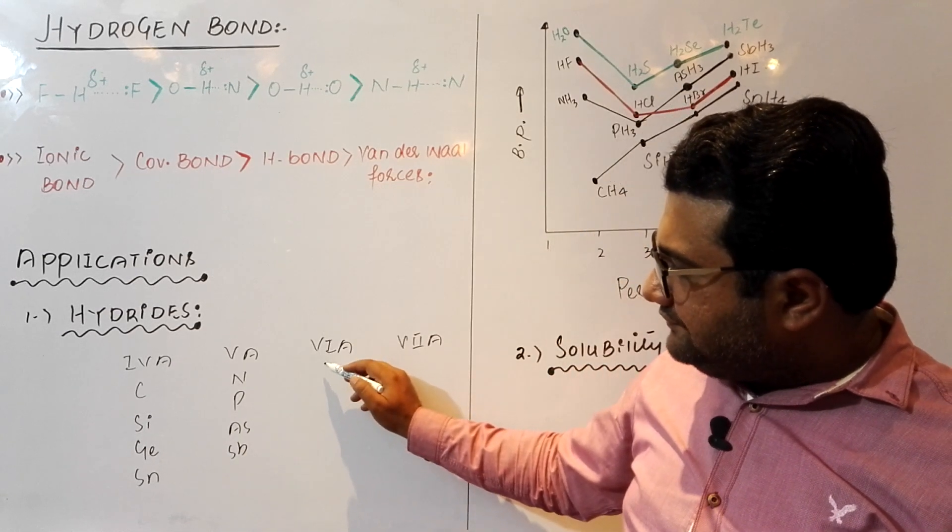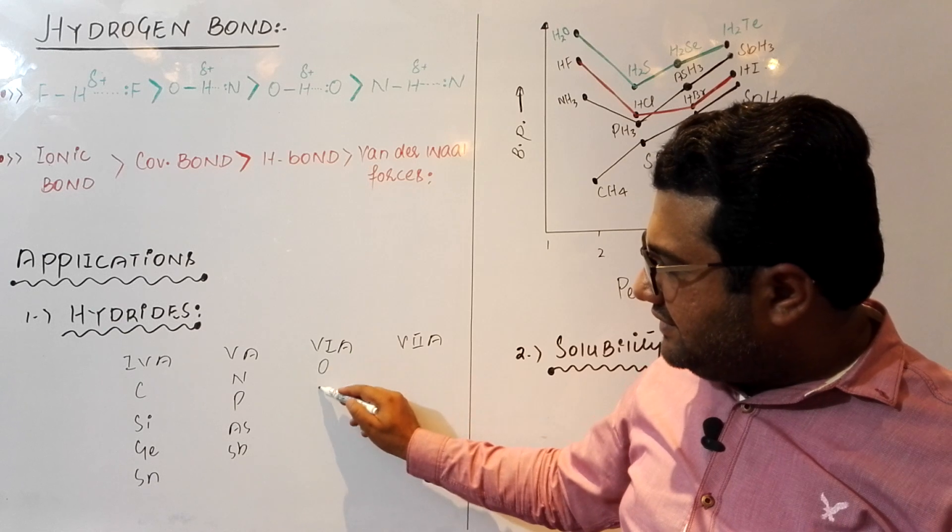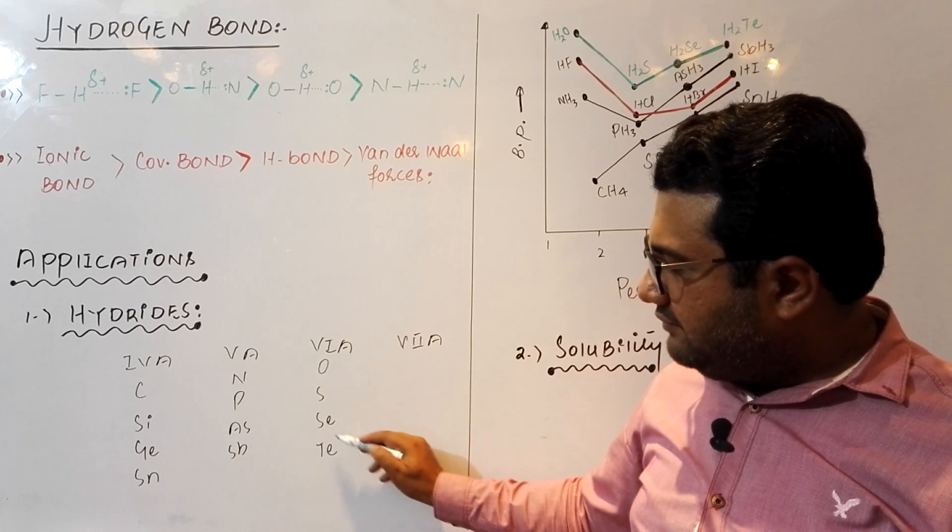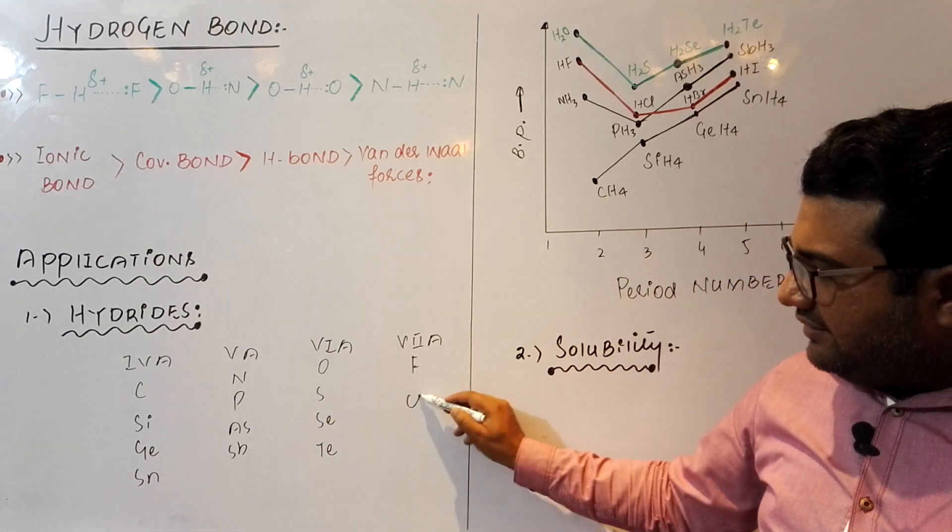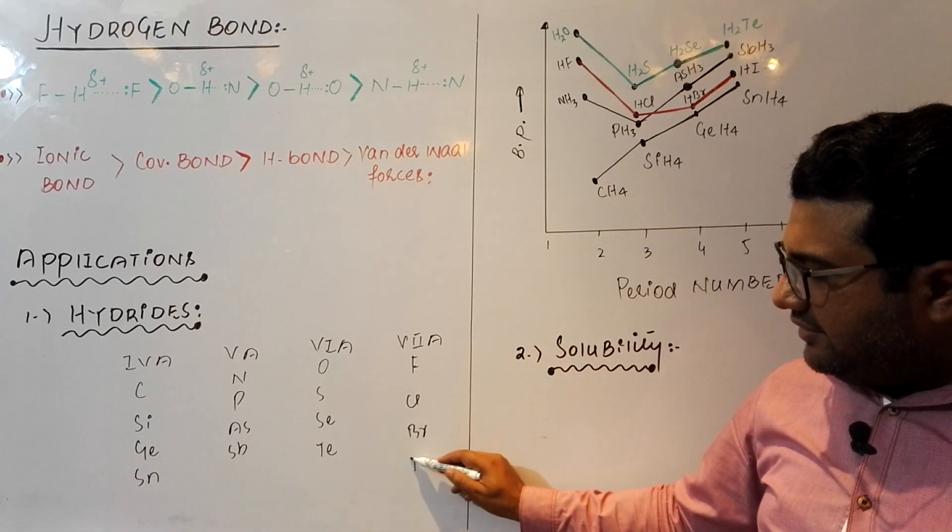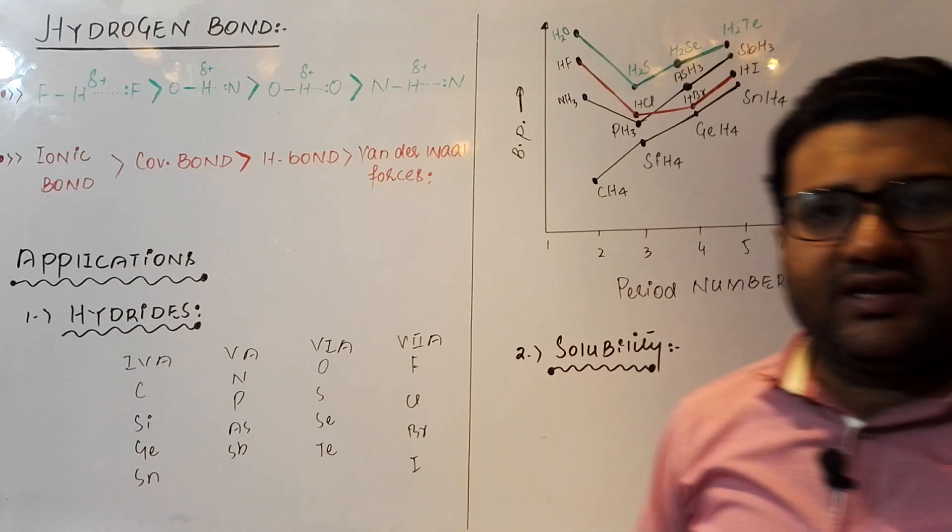In 6A there will be oxygen, sulfur, selenium, tellurium. Polonium is radioactive, so we are leaving it. In 7A, fluorine, chlorine, bromine, and iodine. Astatine is radioactive, so we are again leaving it.